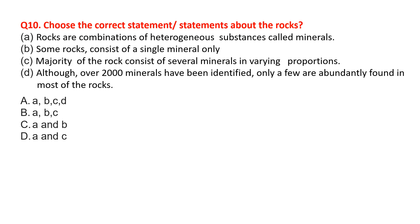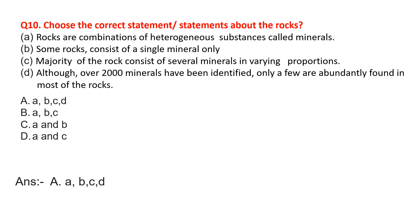Choose the correct statements about rocks. Options: Rocks are a combination of heterogeneous substances called minerals; some rocks consist of a single mineral only; the majority of rocks consist of several minerals in varying proportions; although over 2000 minerals have been identified, only a few are abundantly found in most rocks. The correct option is A, B, C, D — all of the above.